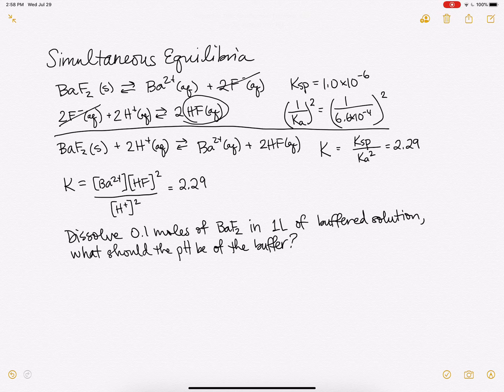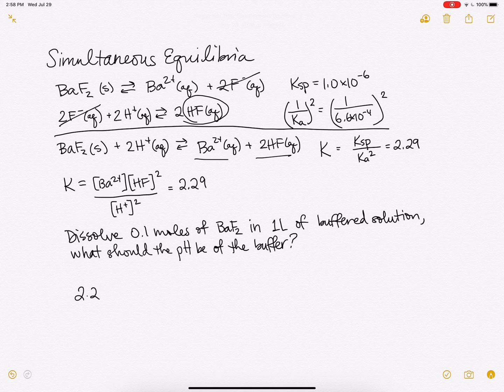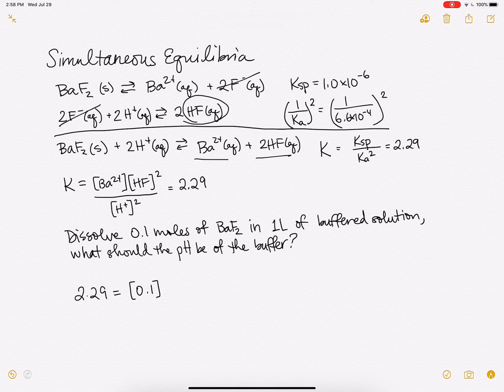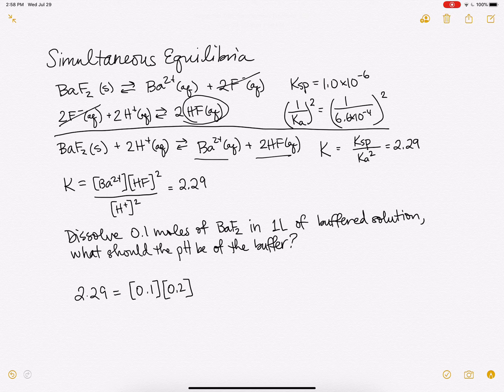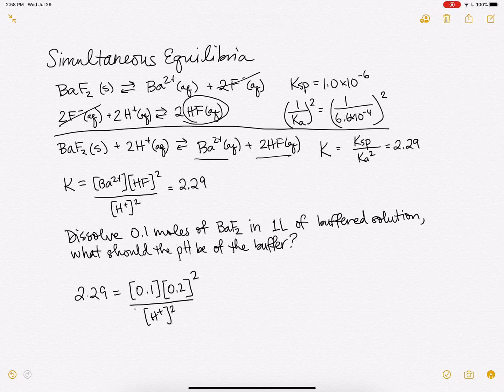So if this is our question that we're wondering about, well, we know if we have 0.1 moles of BAF2, that would result in 0.1 moles of barium ions and 0.2 moles of HF because of the stoichiometry here. So for our K, we can plug in our values here, 0.1 moles of our barium and 0.2 moles of our hydrofluoric acid. And the question will be, what's our H plus concentration?